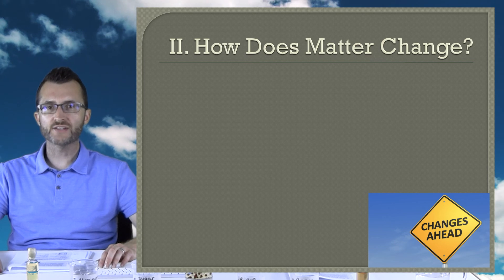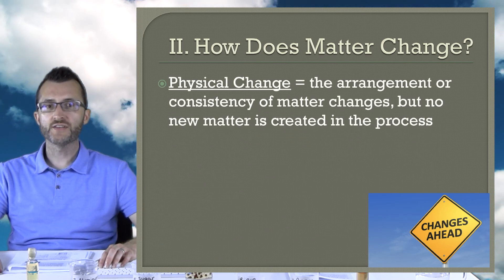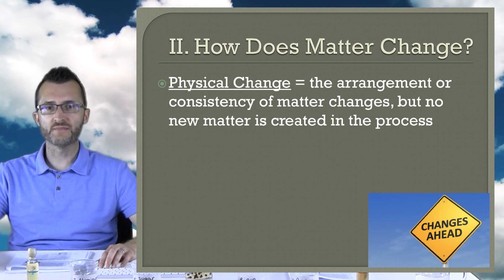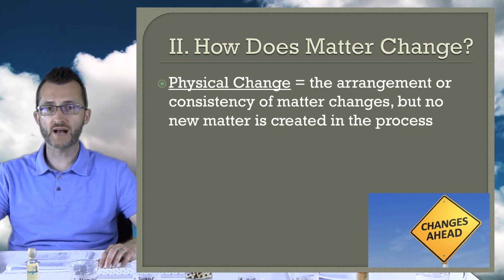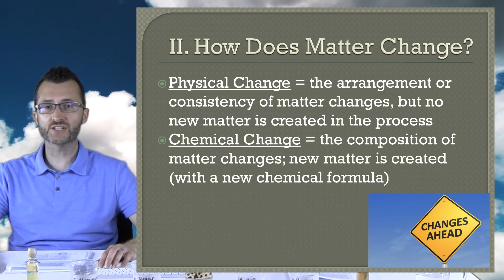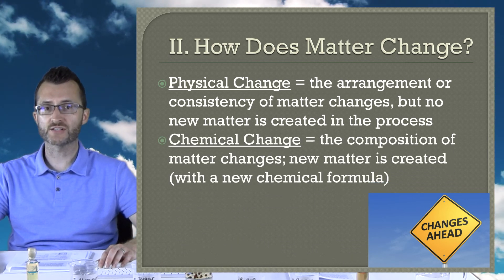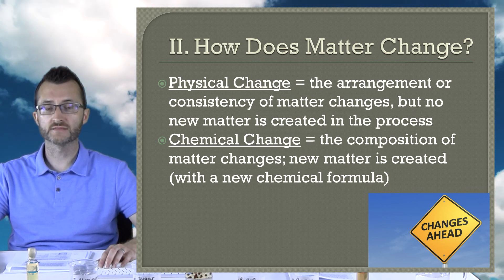How does matter change? In a physical change, the arrangement or consistency of matter changes, but no new matter is created in the process. In a chemical change, the composition of matter changes — new matter is created with a new chemical formula. These are both very technical definitions, and there's more clarity when you see examples of what these two changes are.